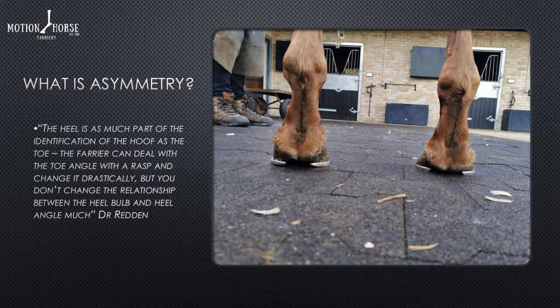Asymmetry is often linked to grazing preferences in young animals, with horses tending to load one limb more than the other — a handedness similar to ourselves being right- or left-handed. It can also be congenital, acquired through breeding, or acquired throughout the animal's life through injuries, uneven weight distribution over extended periods, or direct trauma from a kick.